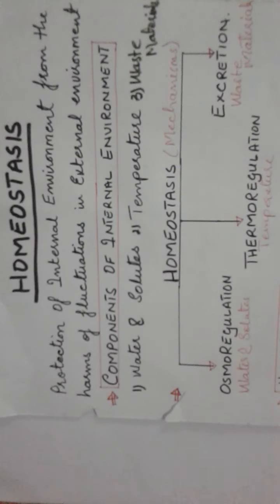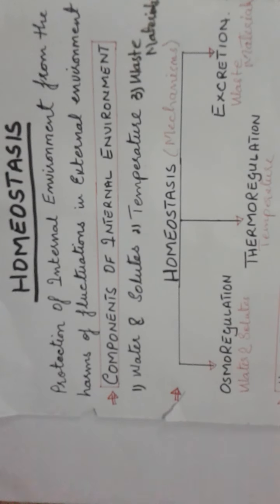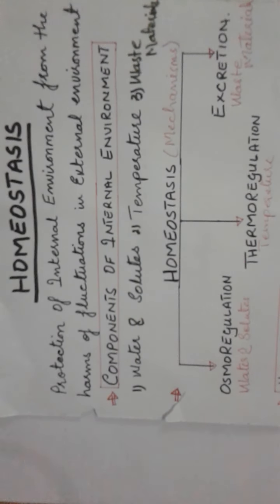Third component is waste material. You know that metabolic activity is always occurring in organisms. You take food, digest it - not all parts are digested. Some parts are digested and absorbed, while other parts become waste material that is harmful for the body, so you have to excrete it out. These three things are the components of internal environment affected by external environment fluctuations.